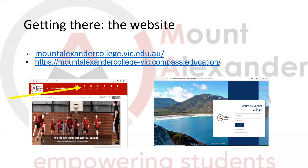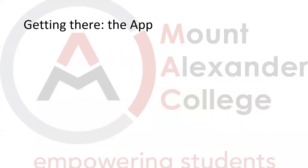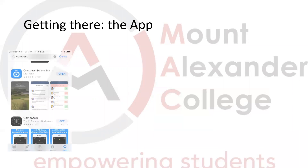Both methods will bring you to this particular page on the right, and you will need to put in your parent username as well as your password. You can also access Compass via the app — you just need to download the app from your app store, which is the Compass school management tool.